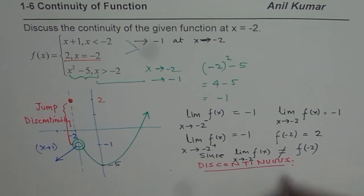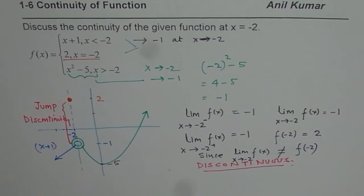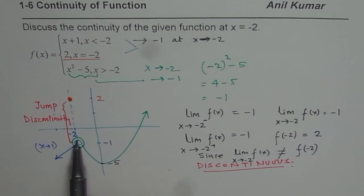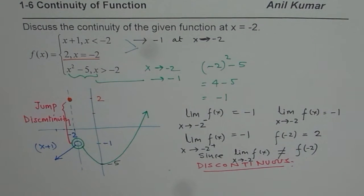So that is how you can explain the discontinuity or the continuity of the function. And as you see from here, the type of discontinuity is jump discontinuity. That is very important to understand. I hope the concept is clear. Let's move forward and work out a few more examples on continuity of functions. Thank you and all the best.